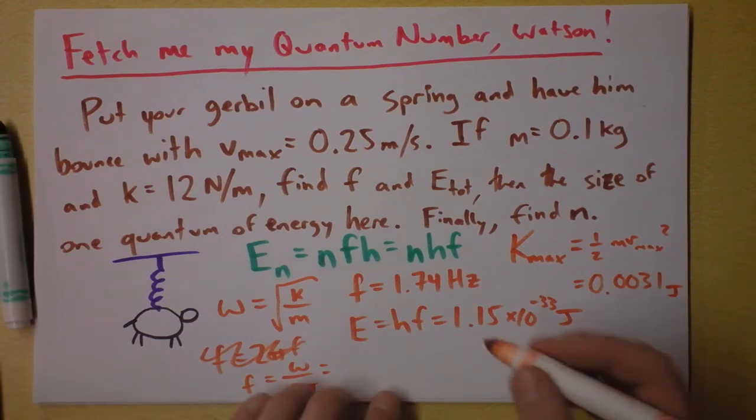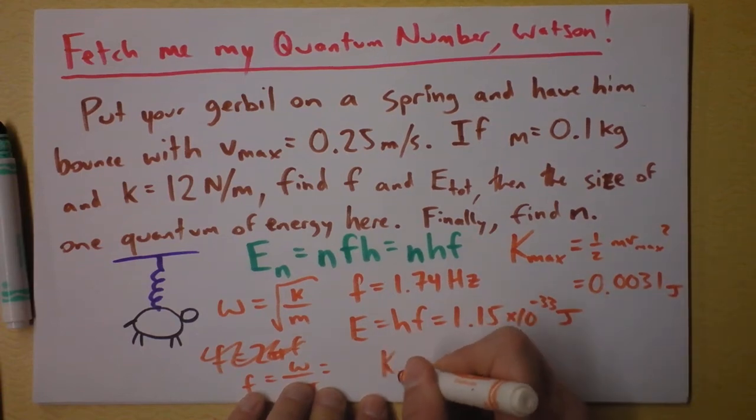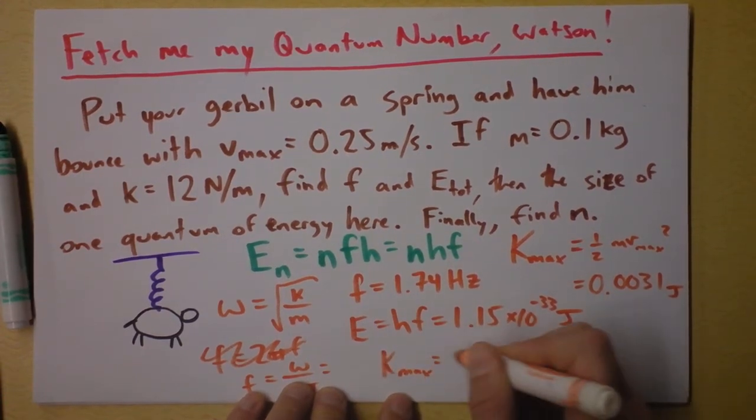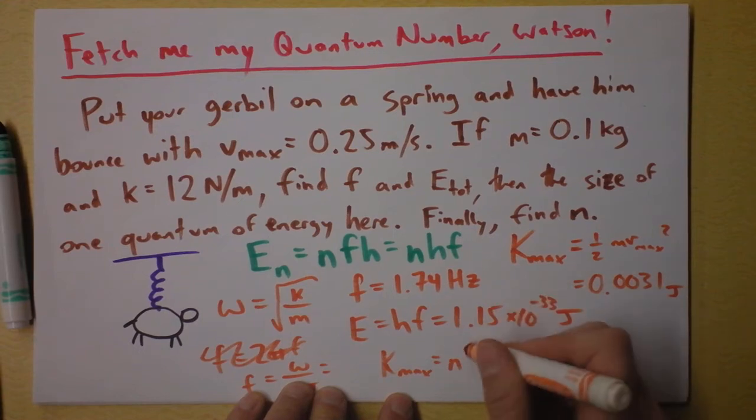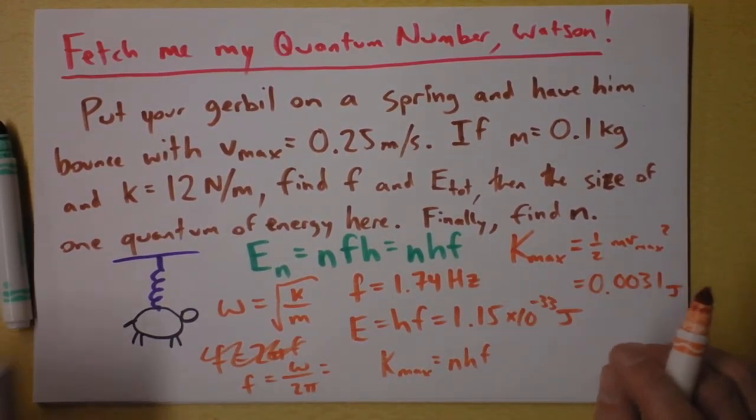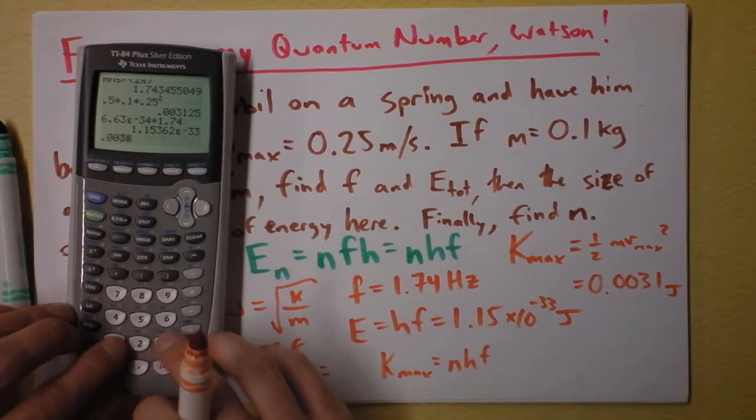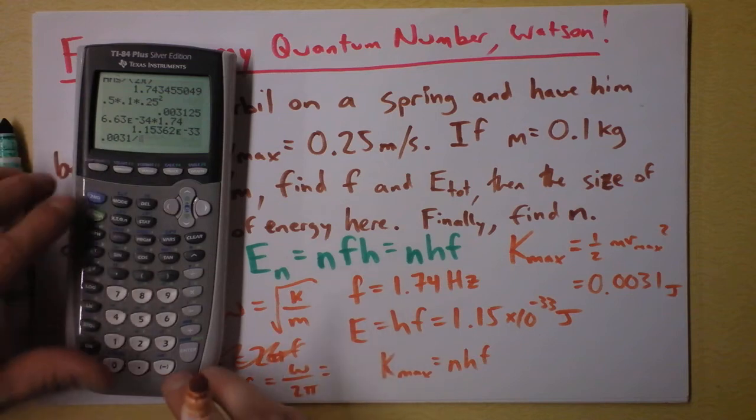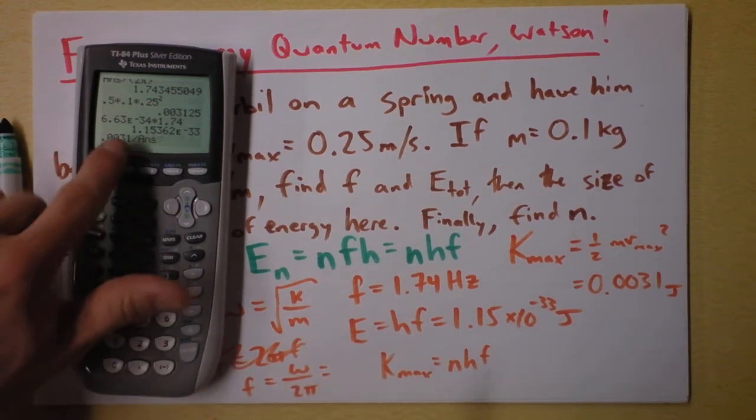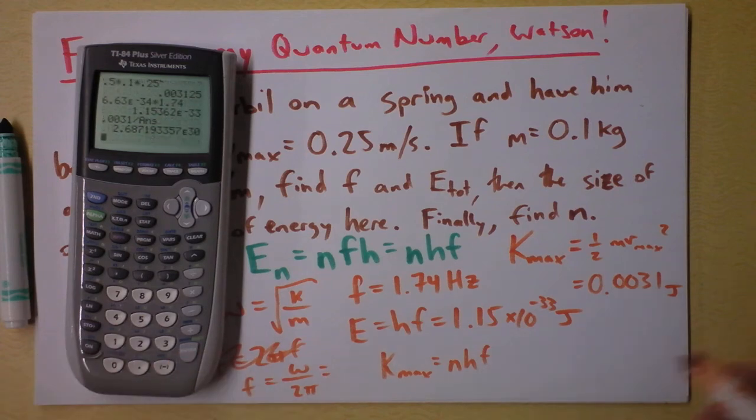Next, let's find the quantum number. I'm going to say that the total energy, K max, is N times HF. And we already know what HF is, so I'm just going to take this total energy, 0.0031, and divide it by the previous answer, which was 1.15362 times 10 to the negative 33. And I find that our quantum number is 2.687 times 10 to the 30th.